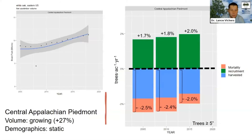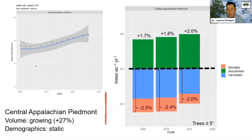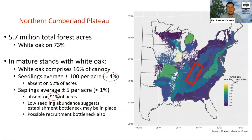Looking at the overstory in the Piedmont, we have no signs of shortages in standing timber — it's actually increasing, with a 27% gain in volume since 2005. But if we look at the demographics on a trees-per-acre basis — births versus deaths — we see that our losses are basically matching what we're adding. For every tree we're adding, we're losing around the same number of trees on a given acre in a given year in this region.